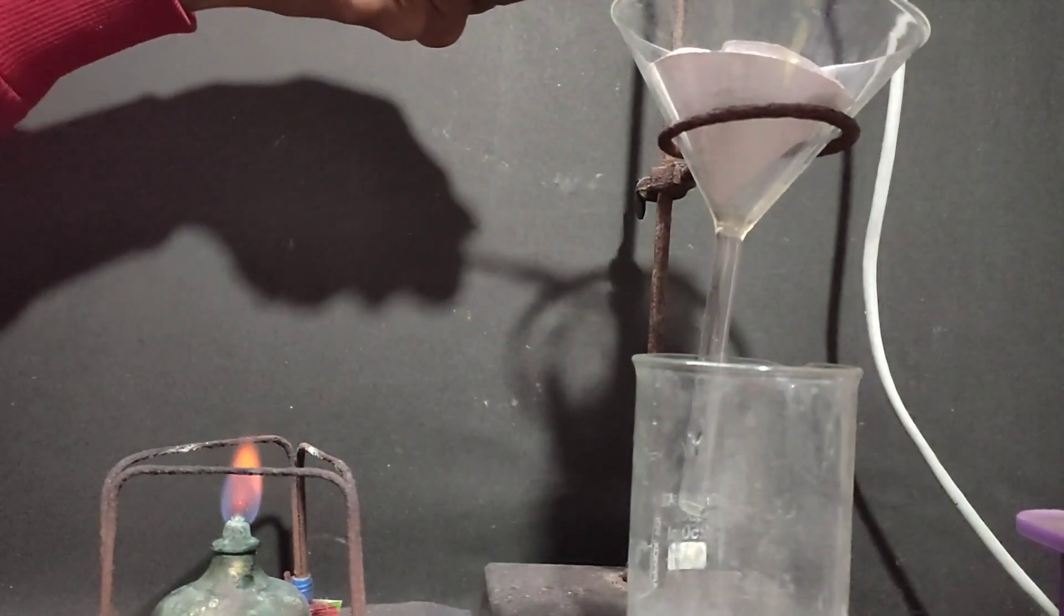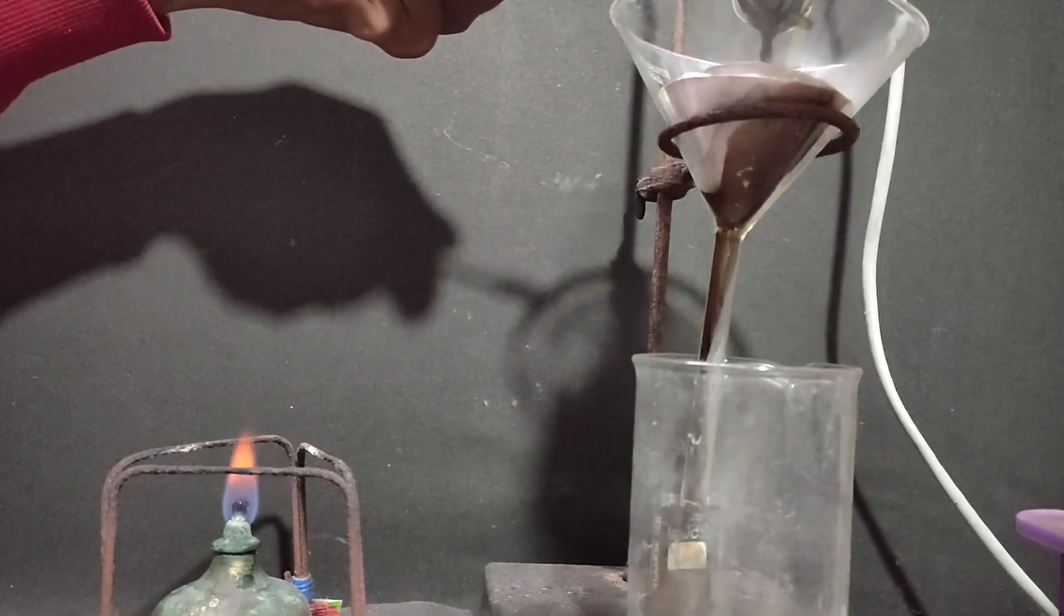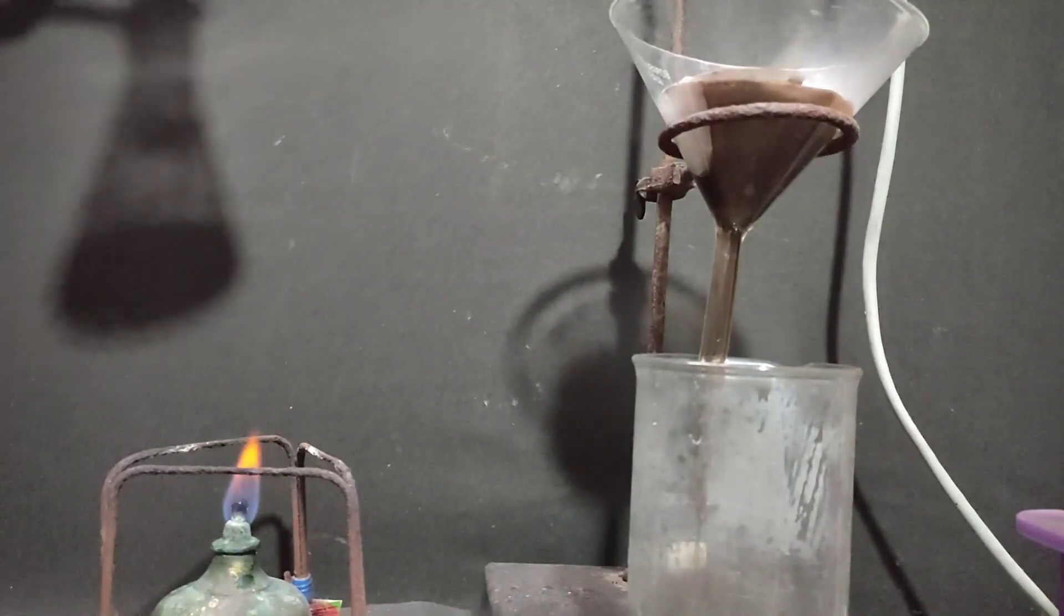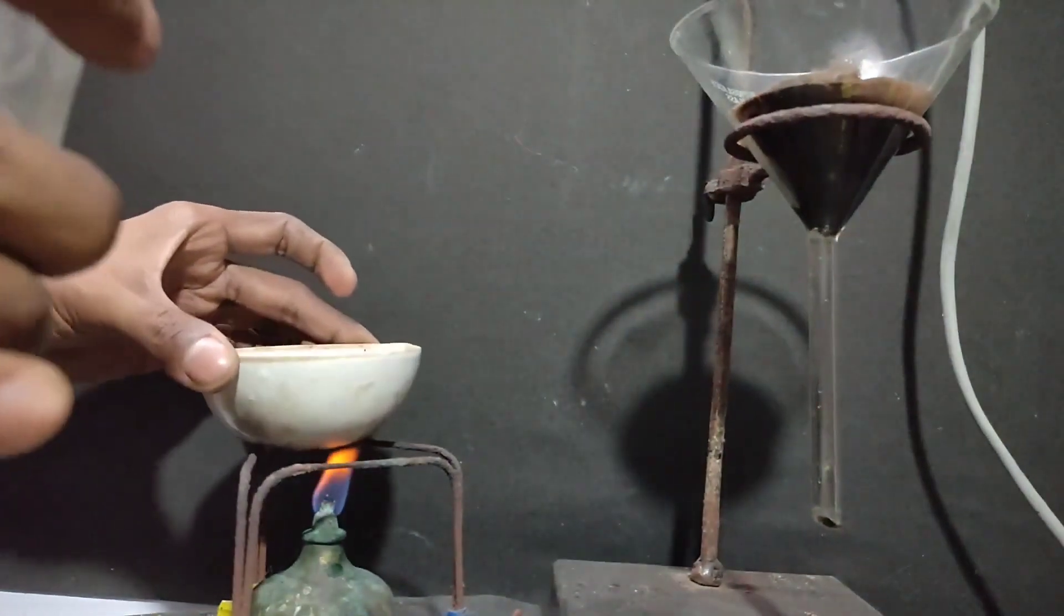The filtrate was black. I filtered it the second time, but still it was black. But this wasn't due to iodine. If it had been due to iodine, it would get decolorized by sodium thiosulfate solution, but it did not.